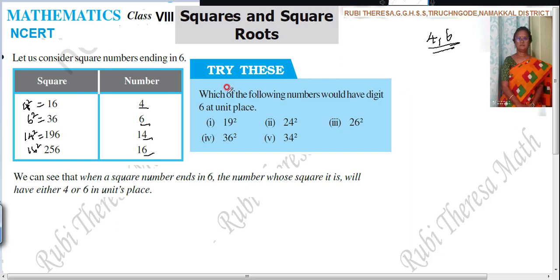So, here they have asked, which of the following numbers would have digit 6 at unit place? You have seen that 4 and 6 should be in unit place for that number, isn't it?